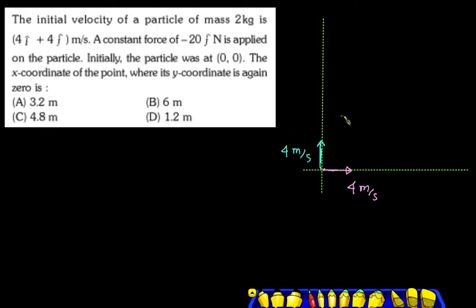Constant force -20j. Force is here in the backward direction. 20N force is along the y-axis. Apply 20N on the particle. Initially the particle is at the origin.